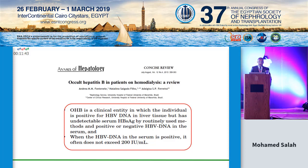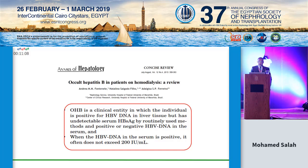A study of occult hepatitis B in hemodialysis patients by Ferreira in Italy showed that it is a clinical entity in which the individual is positive for hepatitis B virus DNA in liver tissue but has undetected serum hepatitis B surface antigen by routine methods, with positive or negative hepatitis B virus DNA in the serum. When the hepatitis B virus DNA in the serum is positive, it often does not exceed 200 international units per ml, which is a very low value.